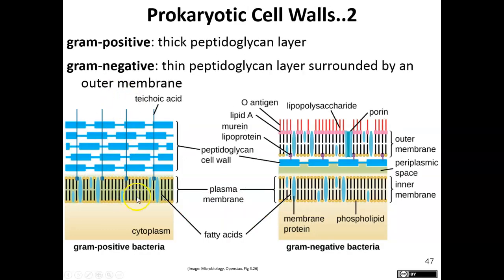Looking at the plasma membrane of bacteria — here is the plasma membrane of a gram-positive cell, and here is the plasma membrane of a gram-negative cell. This is the cytoplasm inside, and the extracellular environment is outside. The cell wall of gram-positives and gram-negatives is very different. There are up to 30 layers of peptidoglycan in gram-positive bacteria, but in gram-negative there are only one or two layers.